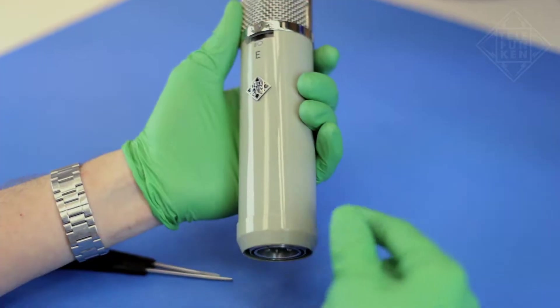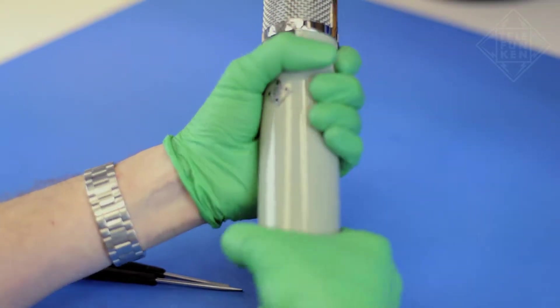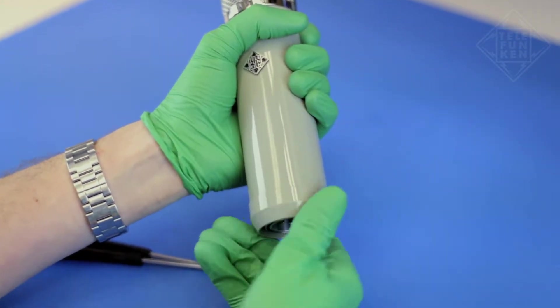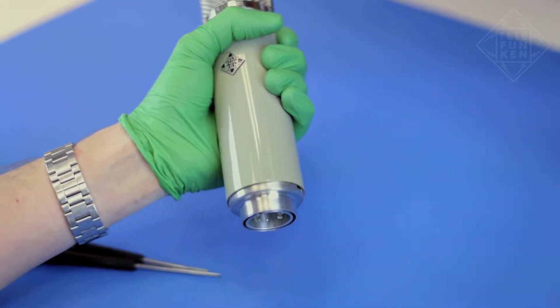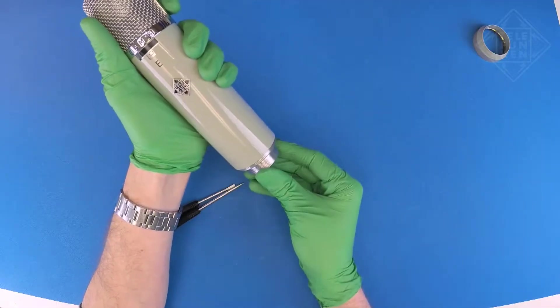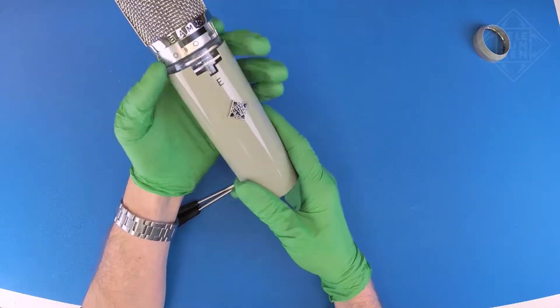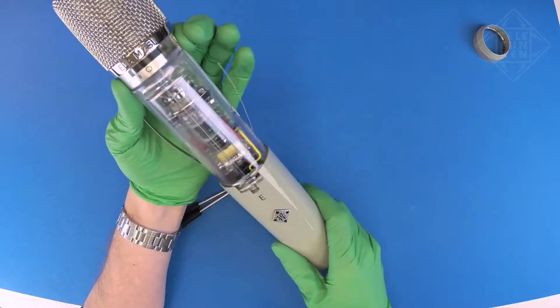Hold the microphone by the body tube and remove the base ring by turning it counterclockwise until unthreaded. Slide off the body tube while maintaining light pressure on the two metal side straps.